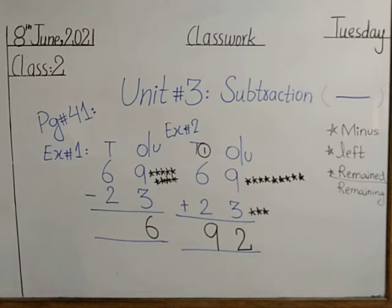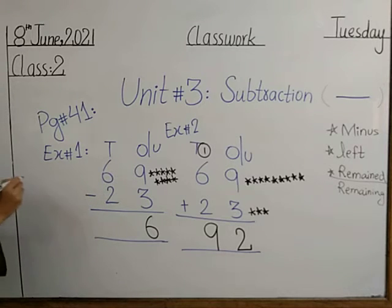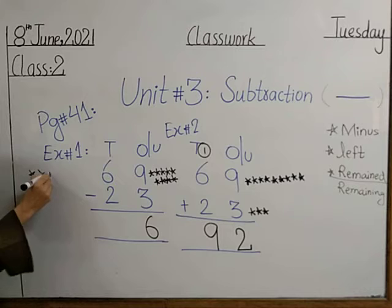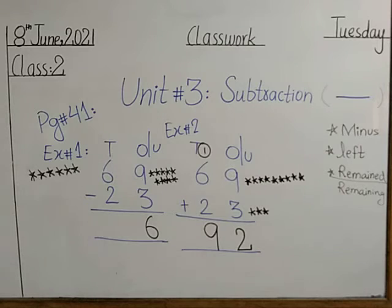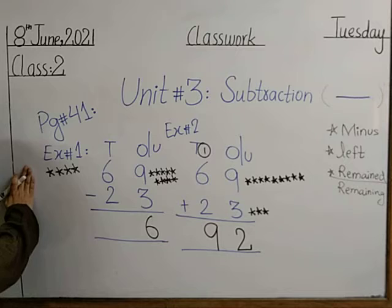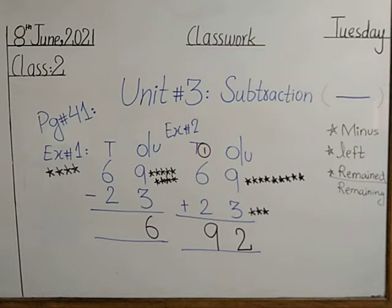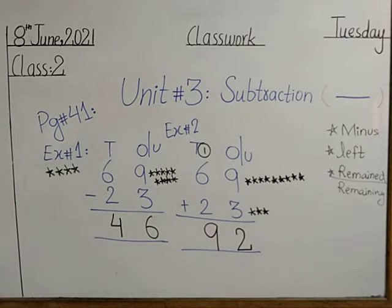Six minus two. Six minus two is equal to what? Draw six stars and remove two stars. Halima, you tell me — how many stars do we have? Good, now we have four stars. So we will write 4 in the tens place value.